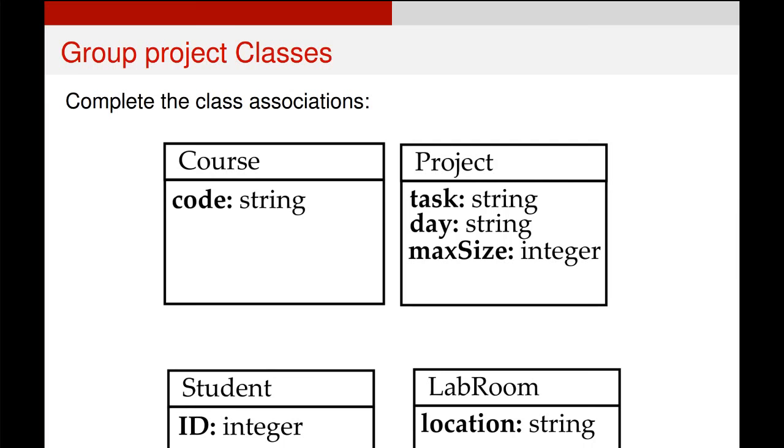What you'll notice, however, for the other three classes is that while our text description of our system didn't specifically require a course code, an ID, or a location for the lab room, we've got them in there already to help you identify different instances of the same class. And it's quite important that each of your class will have an attribute that allows you to differentiate between different instances of the same class. So we're going to give each student an ID, each lab room a location, and each course a course code, so we know that they are different.